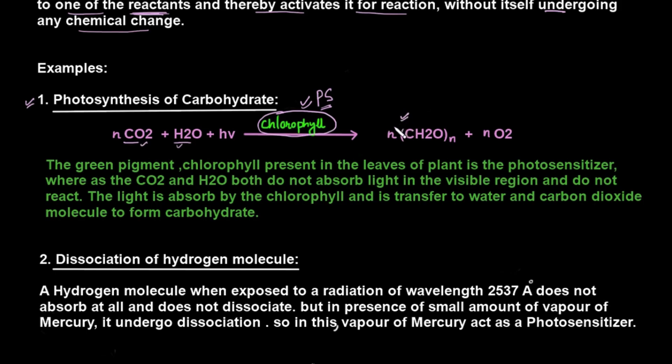So the green pigment, chlorophyll, that is present in the leaves of plants is the photosensitizer, whereas CO2 and H2O both do not absorb light in the visible region and do not react. The light is absorbed by the chlorophyll and is transferred to water and carbon dioxide molecules to form the carbohydrate. So this is the simple reaction or best example in which we can understand the photosensitization reaction.